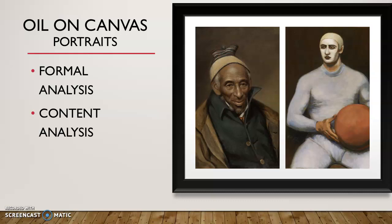Portraits, like the two we're discussing today, were the second highest genre in the academic hierarchy. This primarily included paintings of heroic individuals, private portraits, and self-portraits. Charles Wilson Peale's Portrait of Yarrow Mamout and Walt Kuhn's Athlete in Whiteface are both oil on canvas portraits.